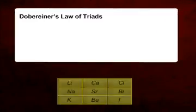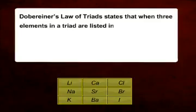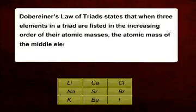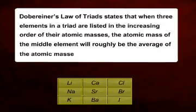Let me explain Döbereiner's law of triads. This law states that when three elements in a triad are listed in increasing order of their atomic masses, the atomic mass of the middle element will roughly be the average of the atomic masses of the other two elements.